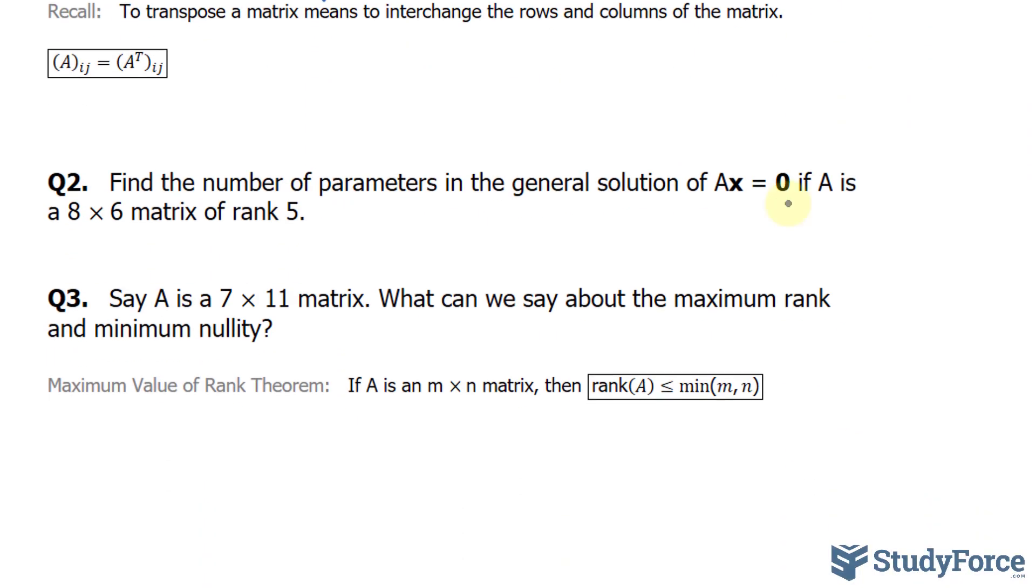Let's move on to question 2. The question reads: Find the number of parameters in the general solution of the matrix A times the column vector x equals 0 if the matrix A is 8 by 6 and has a rank of 5. Keep in mind that when they ask for the number of parameters, they're actually looking for the nullity of that matrix.